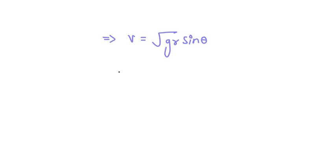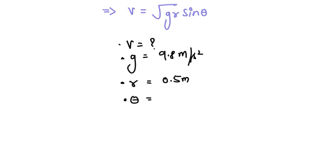Here we have been given that V is the velocity we need to calculate. g is the acceleration due to gravity, which is 9.8 meters per second squared. r is the radius of the circle, which is 0.5 meters. And theta is the angle the string makes with the horizontal, which is 34 degrees.